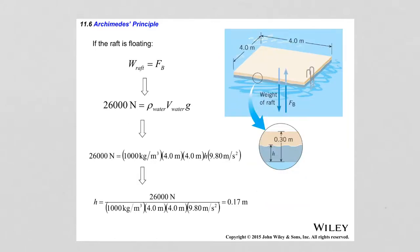Since the raft floats, the weight of the submerged portion is balanced by the buoyant force. Setting 26,000 N = ρ_water × (4 × 4 × H) × g and solving for H gives H = 0.17 meters. So 17 centimeters of the raft are underwater.